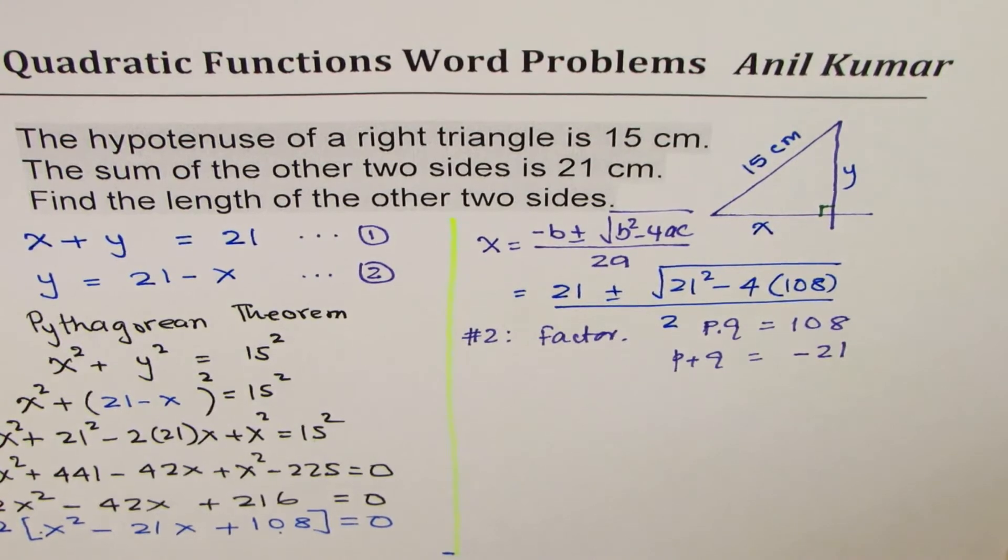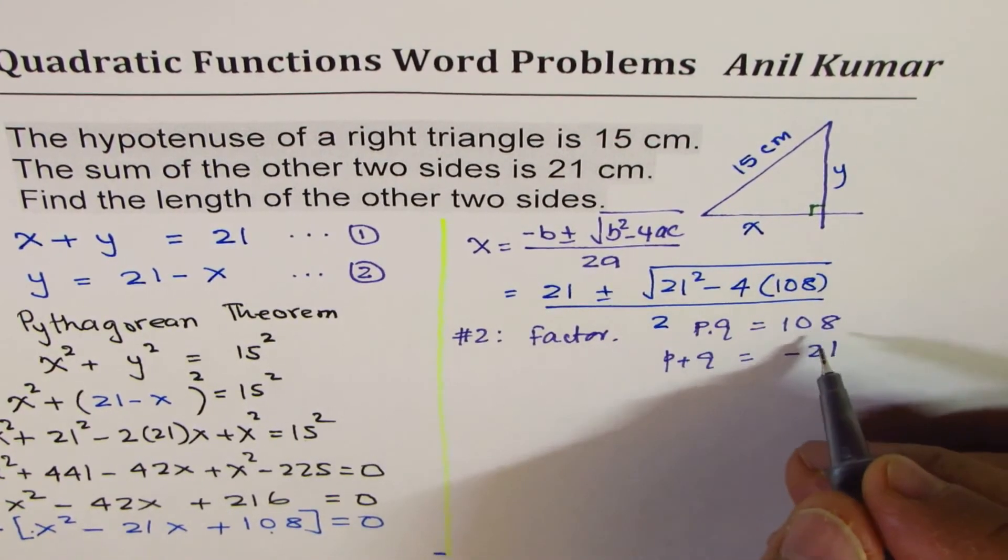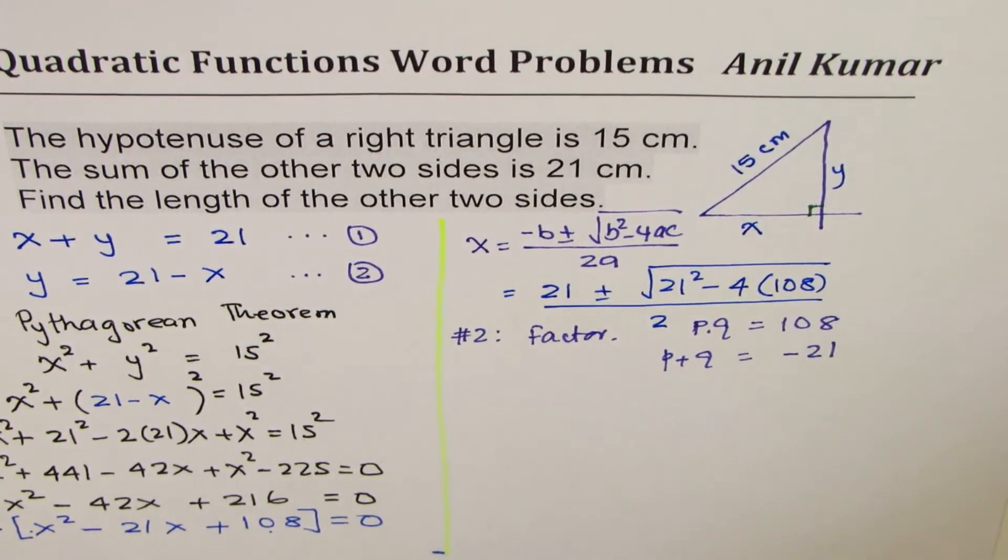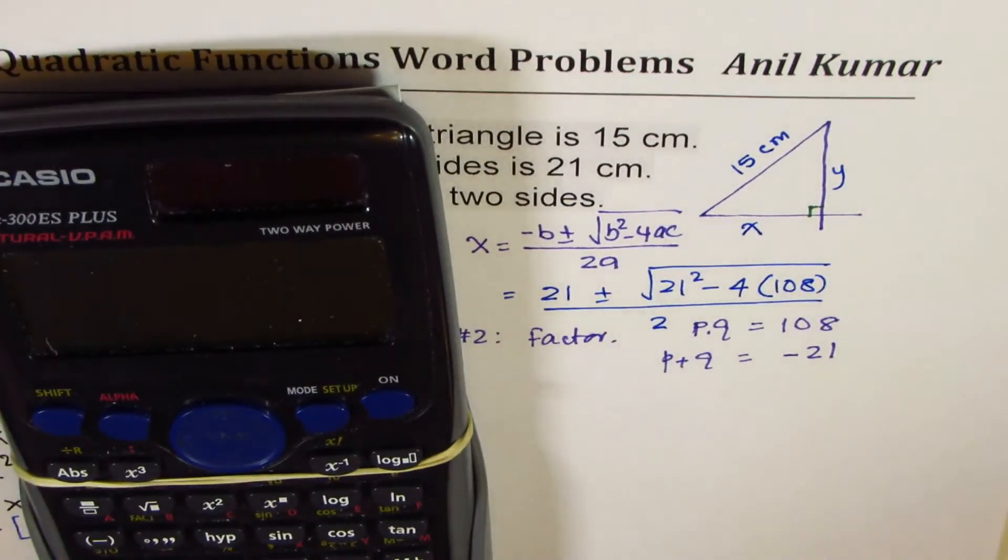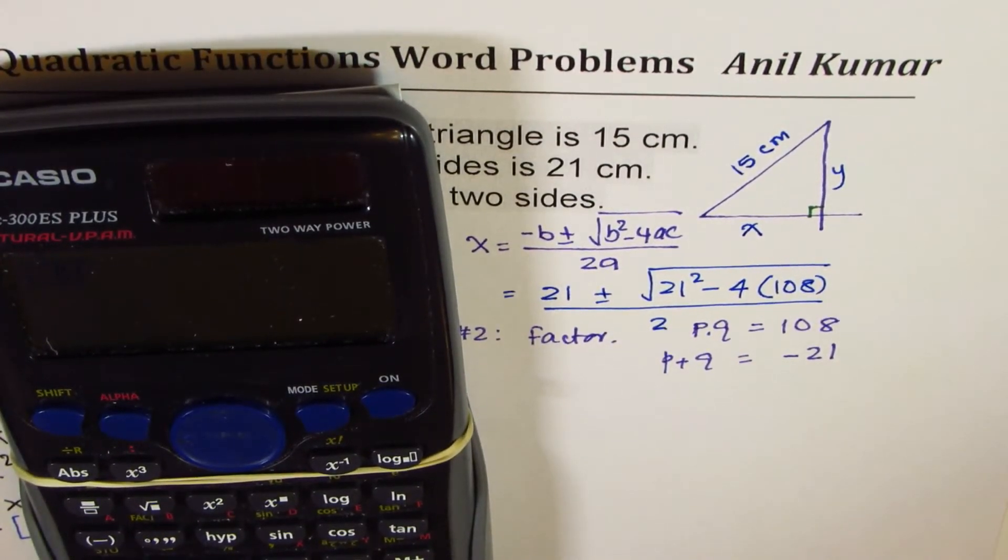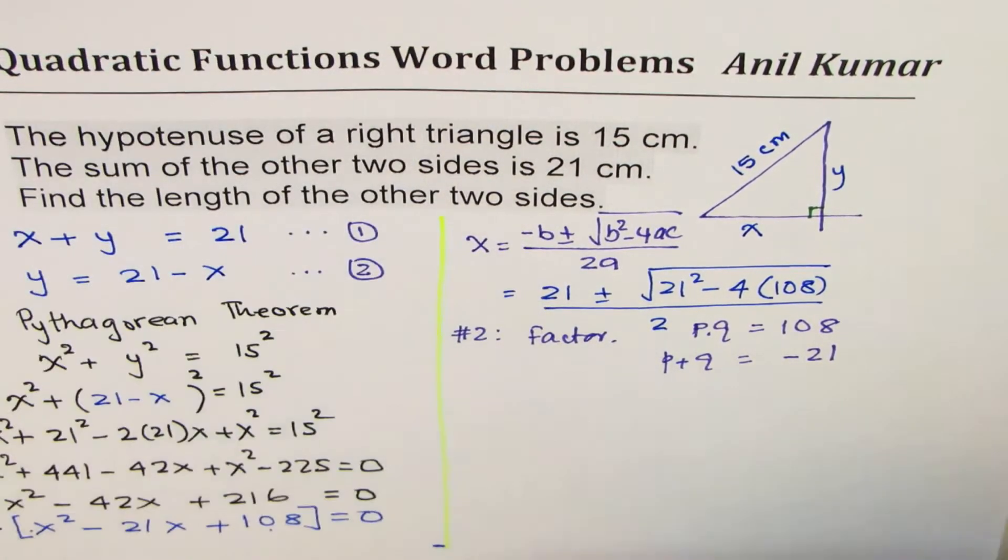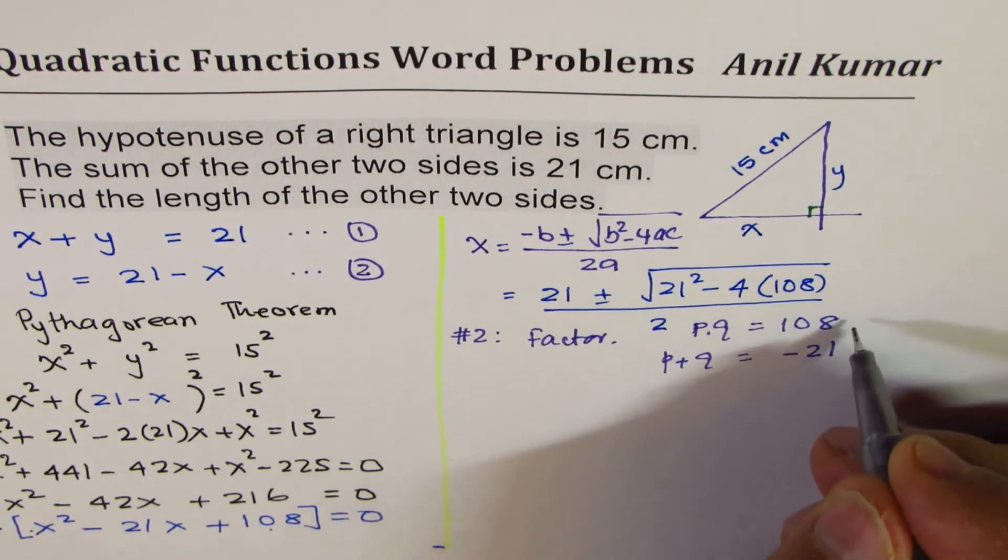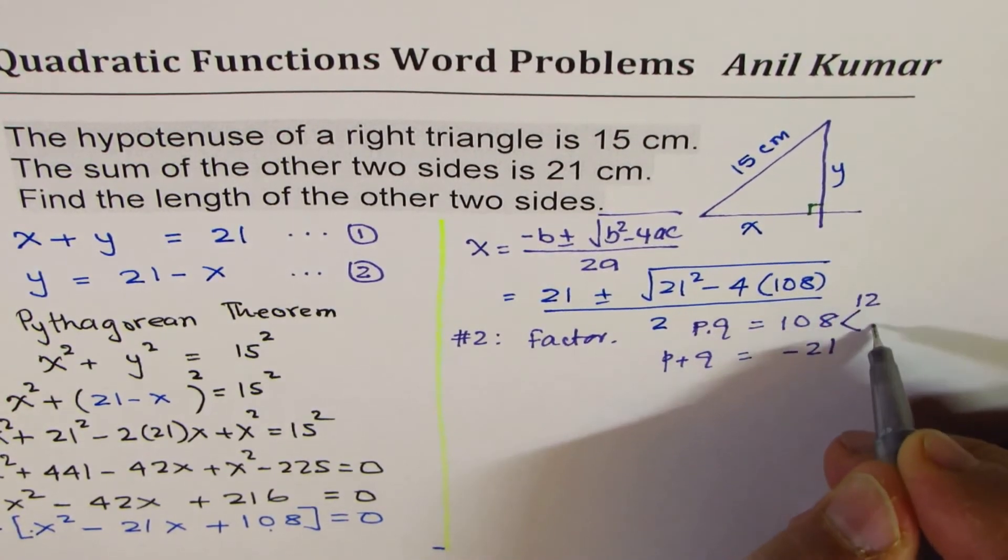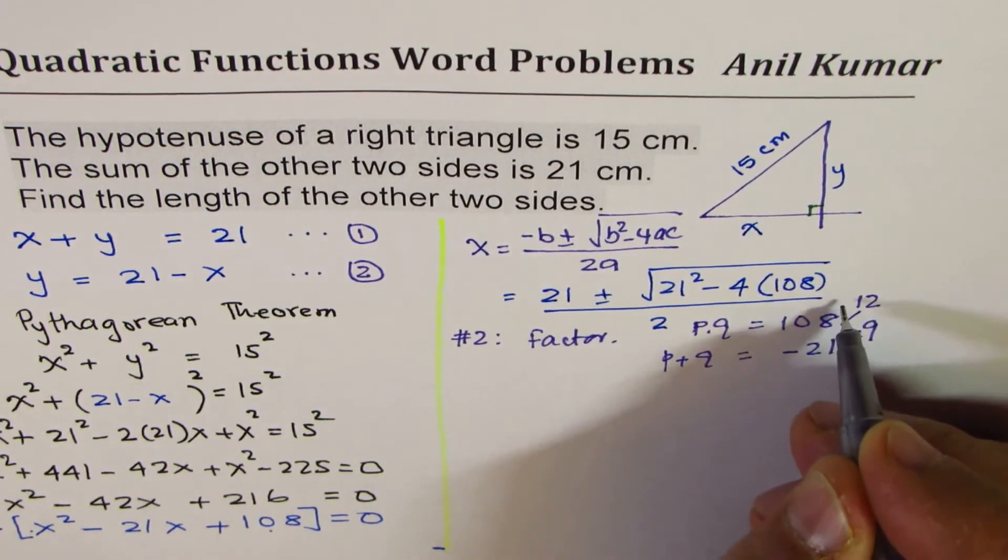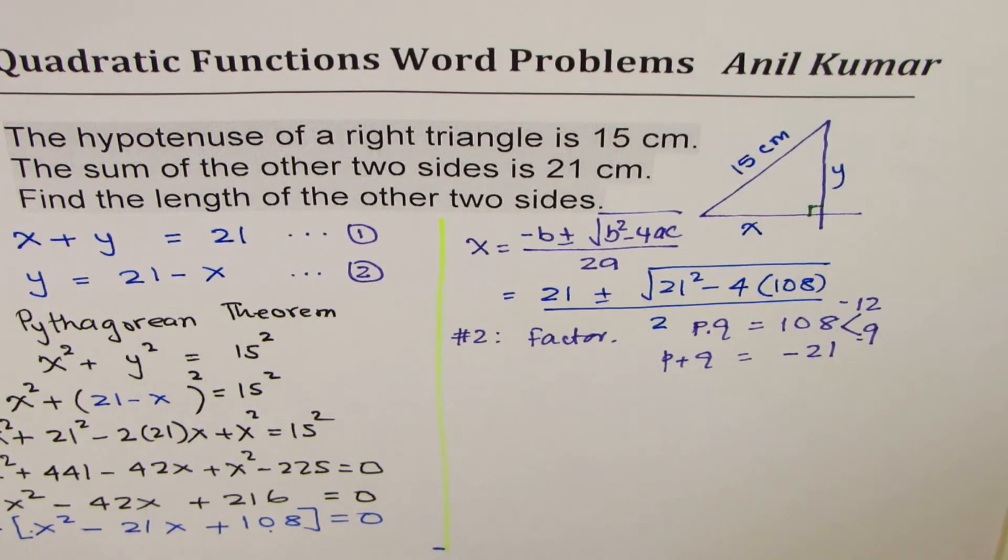So you can do trial and error. Maybe 108 is 12 times something. If I divide 108 by 12, I get 9. So 12 and 9 gives me 21 also. So that may work. I'm using 12 and 9. Since I need negative, I'll use both negative.